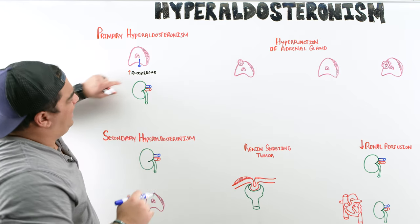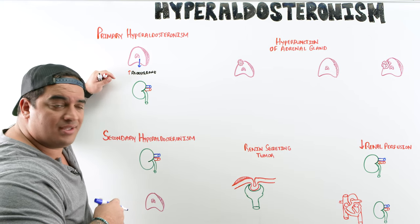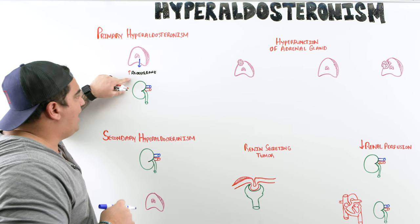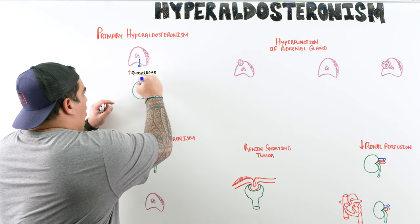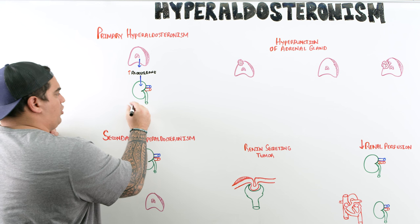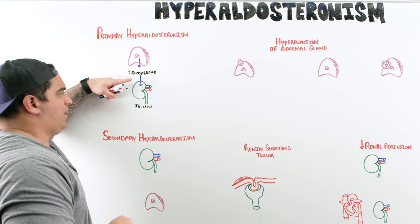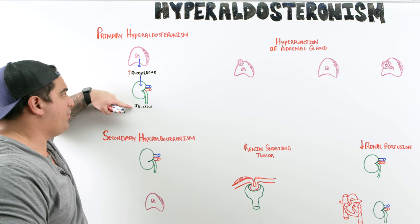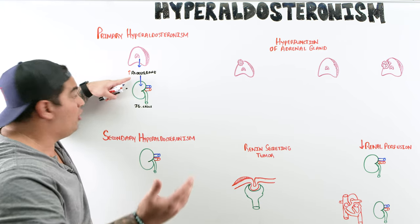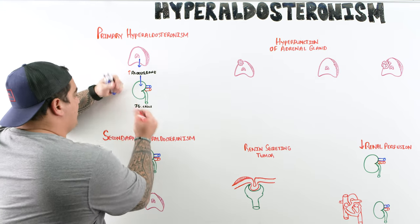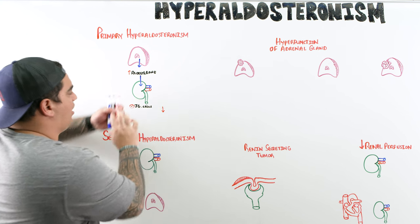We know that aldosterone works by acting in the distal convoluted tubule, reabsorbing sodium, reabsorbing water, and secreting protons. Aldosterone levels are highly regulated by renin levels. Whenever aldosterone levels are high, they act on the juxtaglomerular cells in the kidney. The JG cells will sense that and say we don't need aldosterone to be high anymore, so they stop producing renin so that we don't make angiotensin I, angiotensin II, and no more aldosterone. So you inhibit the JG cells, and as a result, you drop the production of renin.